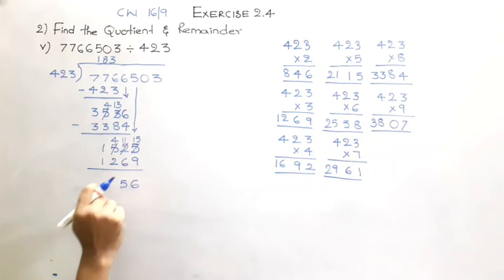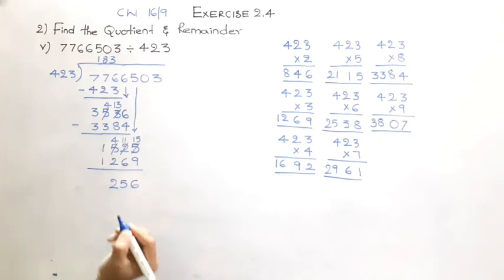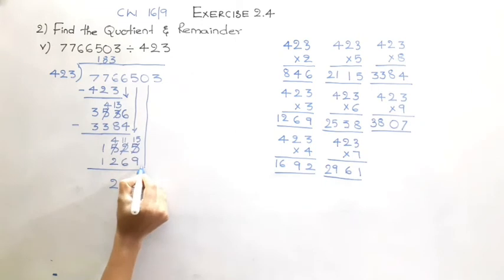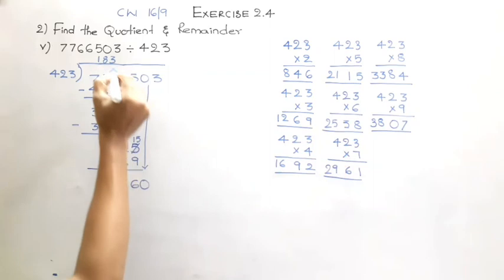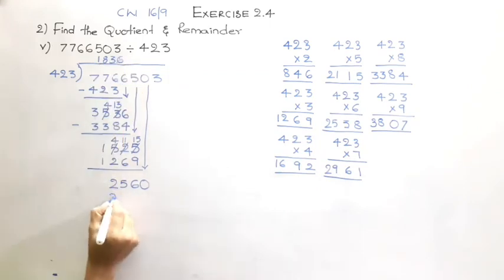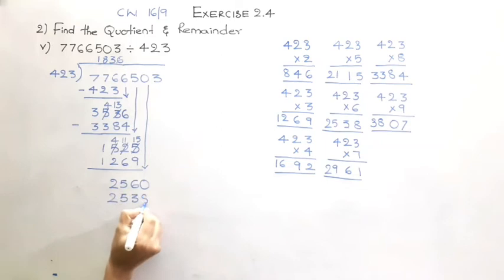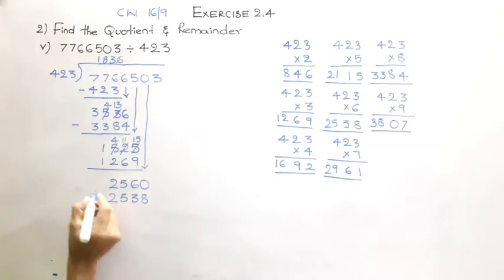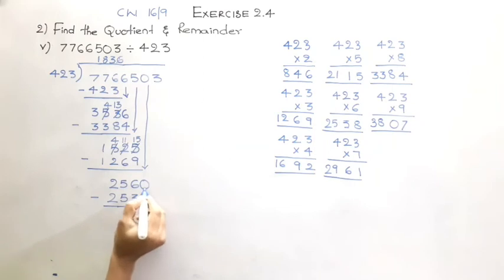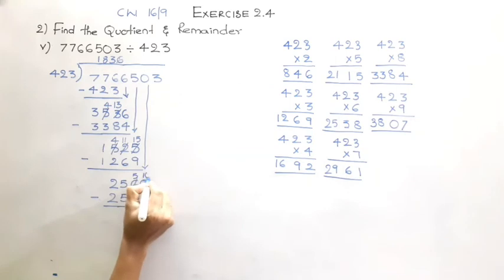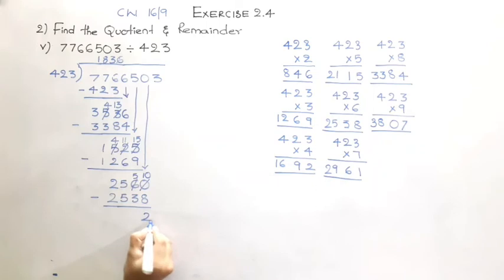11 minus 6 is 5, and 4 minus 2 is 2. Now bring the next digit of the dividend which is 0, giving a new value of 5560. From the table we are close at 6 times, giving 2538. Please observe the board very carefully — this is a very important point. As we can't subtract 8 from 0, we borrow: this becomes 10. 10 minus 8 is 2, 5 minus 5 is 0, 5 minus 5 is 0.